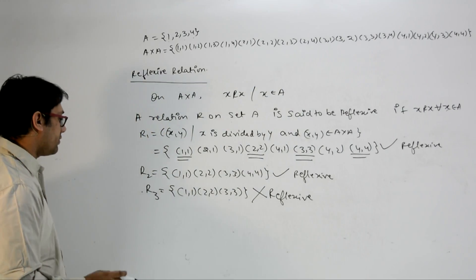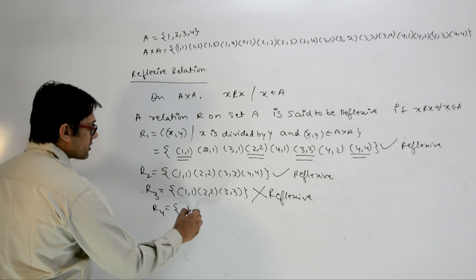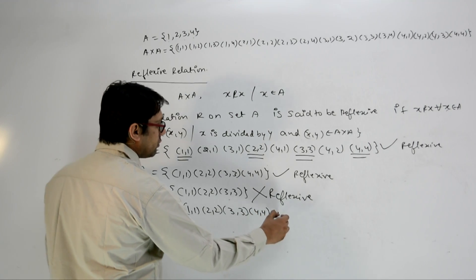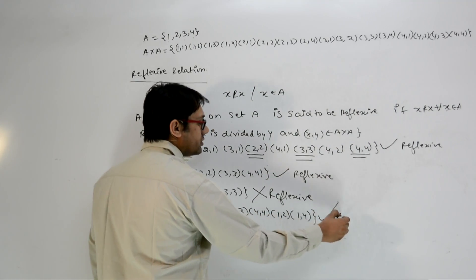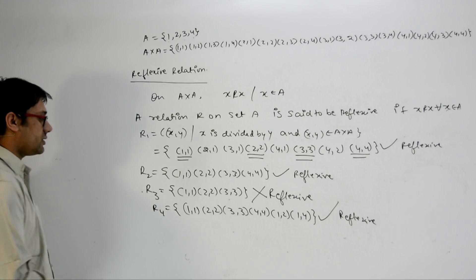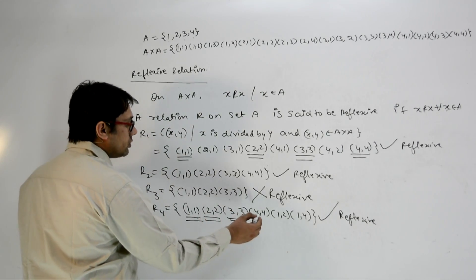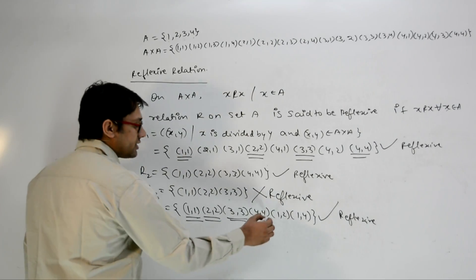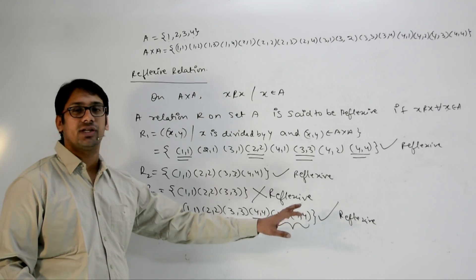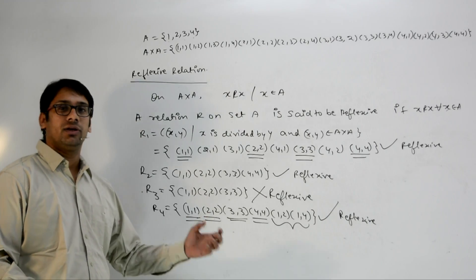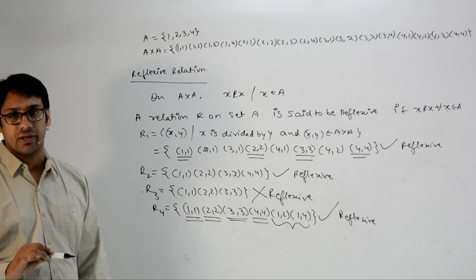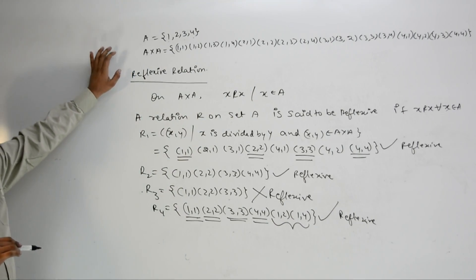If we define relation R4 containing (1,1), (2,2), (3,3), (4,4), (1,2), and (1,4), this relation is also reflexive because it contains all the required ordered pairs (1,1), (2,2), (3,3), (4,4). The extra pairs may or may not be there — that doesn't matter — but these diagonal pairs (1,1), (2,2), (3,3), (4,4) should always be present for a reflexive relation.